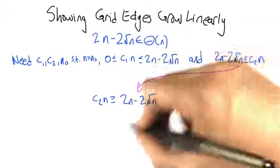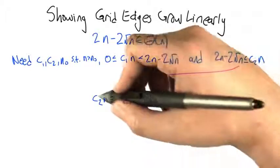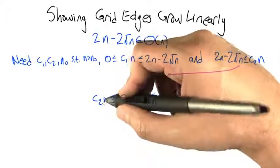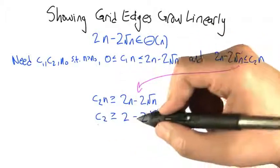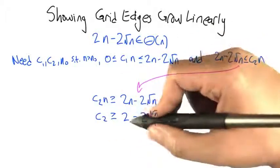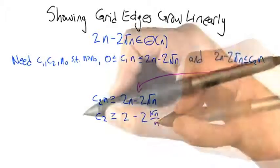If we just copy this inequality down, just flipping it around, make it a little easier to think about. We want a c2 so that c2 times n is bigger than this. Divide through by n. Now we need a c2 that is bigger than 2 minus something that's actually growing. 2 should work for that.